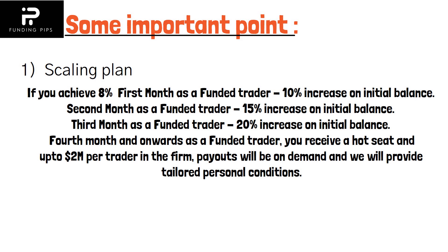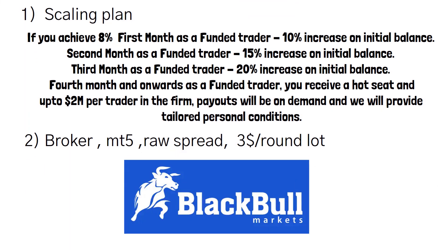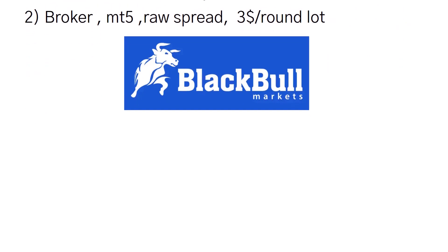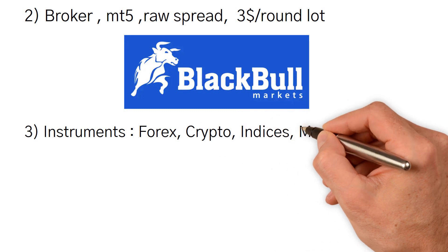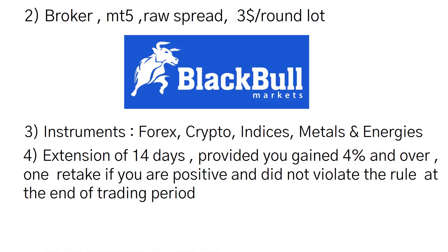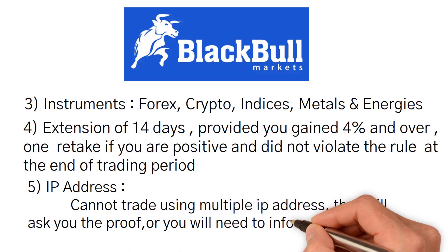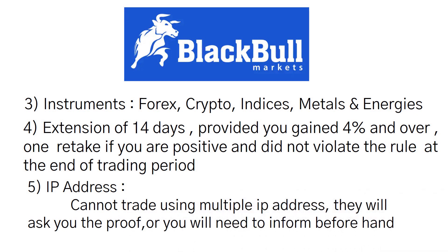You can request a payout whenever you want. The broker they use is Black Bull Markets, the trading platform is MetaTrader 4, raw spread is provided, and commission is $3 per round lot. Available instruments include forex, crypto, indices, metals, and energies. An extension of 14 days is available if you have gained 4% or more and your trading period is about to expire with only four days left, provided you have not violated any rules. For a retake, if you are in profit, have not violated any rules, and your trading period is over, you can request a free one-time retake. Lastly, you cannot trade using multiple IP addresses without informing them beforehand.